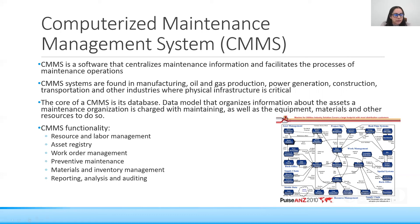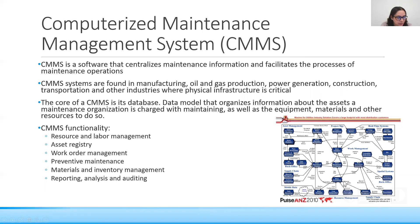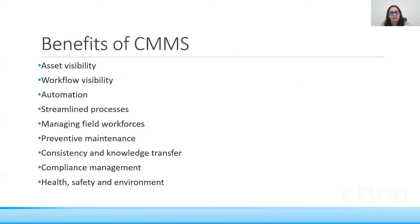The CMMS work management structure shows everything interlinked — real-time systems, project management, asset management, back office, supply chain, and work management are all connected. Work scheduling and maintenance management are integrated, making it effectively a work order system linked with project management, real-time asset management, supply chain, and back office functions.